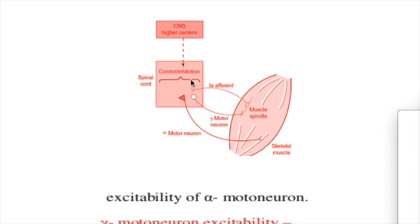The supraspinal pathway, when inhibited or interrupted, normally inhibits the alpha and gamma motor neurons, which are excitatory in nature — and this inhibitory action is lost. The alpha motor neuron innervates the extrafusal fibers and causes contraction, so contraction is increased. The gamma motor neuron innervates the intrafusal fiber spindles, exciting the 1a fibers to cause an increase in stretch reflex.